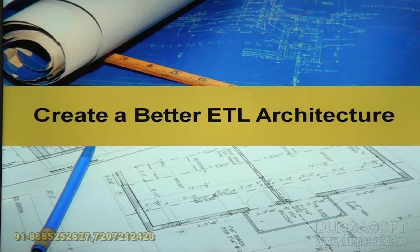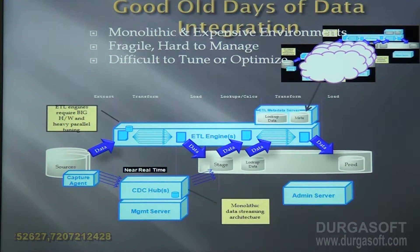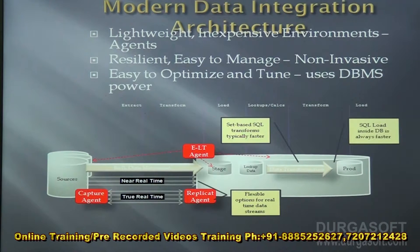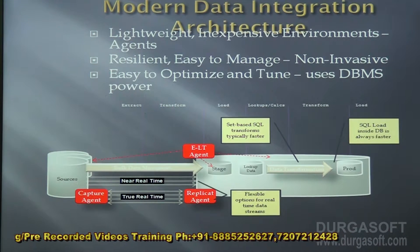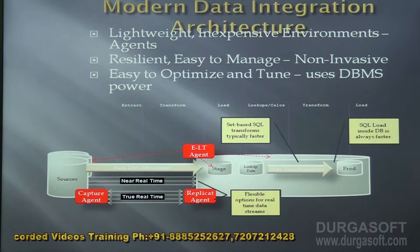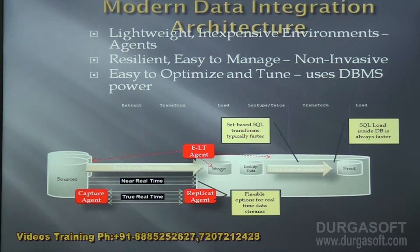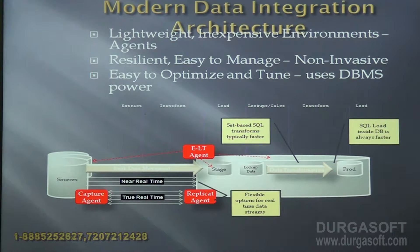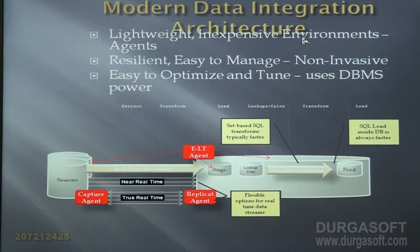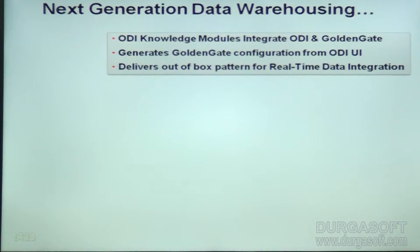With Oracle Data Integrator, we can create a better ELT architecture. The old days of data integration — as you can see here — were like a triangle: hard to manage and difficult to tune and optimize. When loading data from source to target, the ELT tool helps in many ways. The modern data architecture uses lightweight, inexpensive environments with agents running interfaces as needed — resilient, easy to manage, non-invasive, and easy to optimize. It uses DBMS power so that extraction, transformation, and load all happen at the target level, making it much faster than traditional ETL tools.